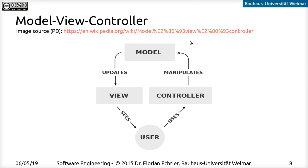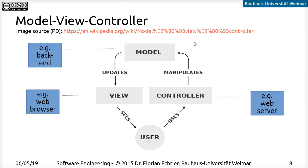One very simple example would be to consider the backend in a web application as the model — the MySQL database or whatever. Then the web browser is basically corresponding to the view. And the web server Apache or whatever is the controller. That's one possible way to interpret the different components in a regular web application as Model-View-Controller.